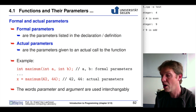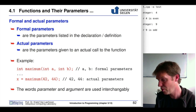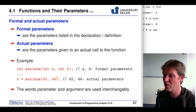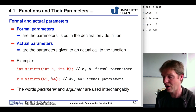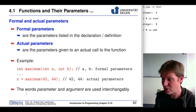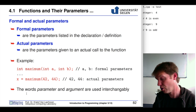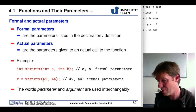Once we use our function — for instance calling maximum with 42 and 44 — then those 42 and 44 are the actual parameters: the values that are assigned to a and b and put into the function. As a remark, I use parameter and argument interchangeably — they're basically the same thing, referring to what you supply to a function.